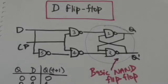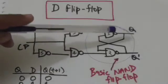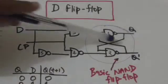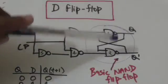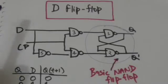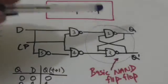Hello friends, welcome back. In this tutorial we will study about D flip-flop. This is the logic diagram of D flip-flop. It consists of a basic NAND flip-flop — gate number one and gate number two form a basic NAND flip-flop. D flip-flop has one input D and two outputs Q and Q-naught.